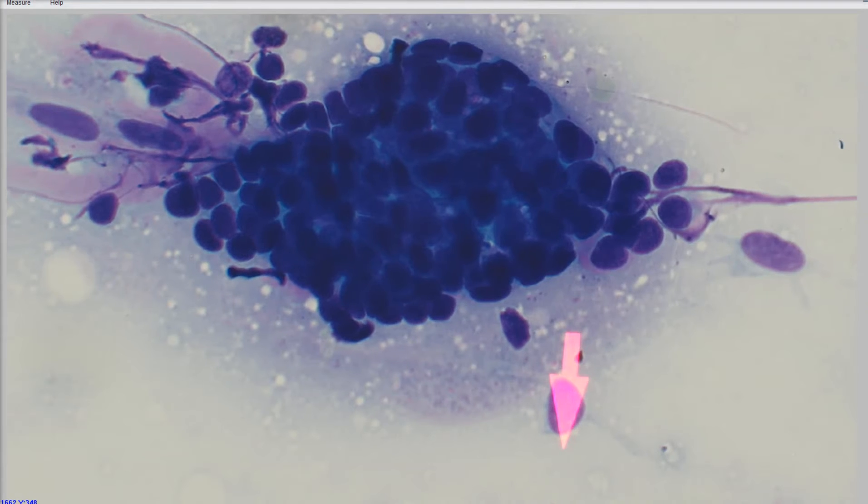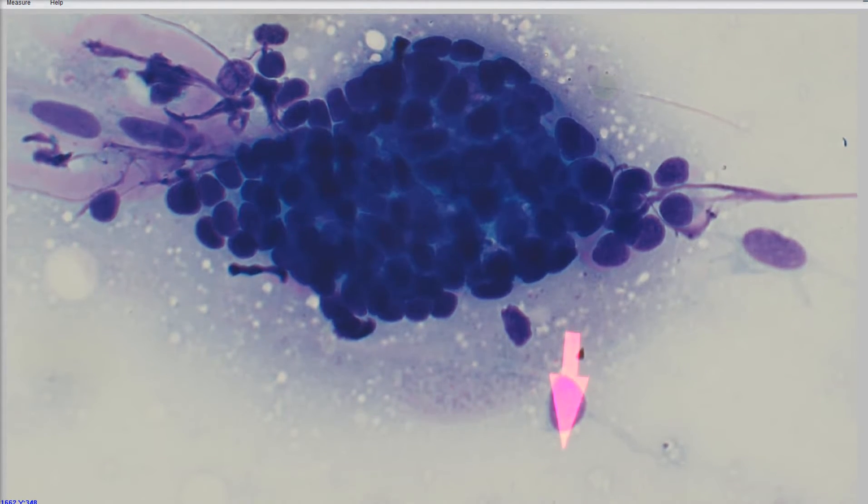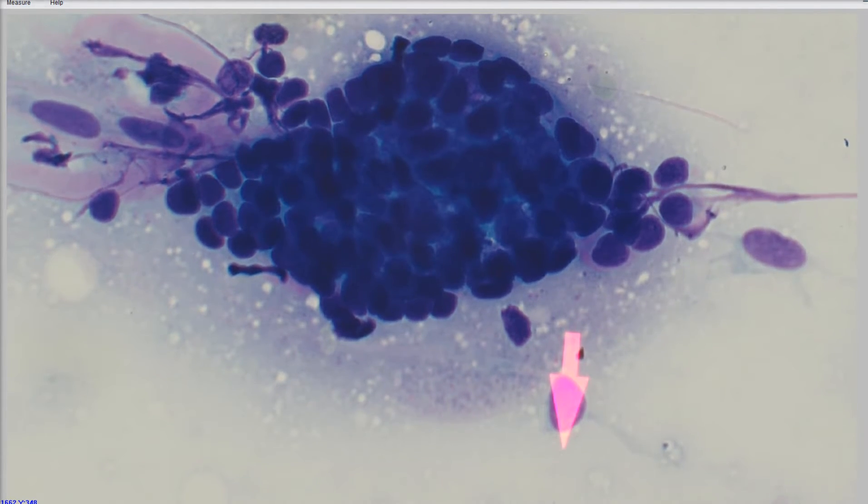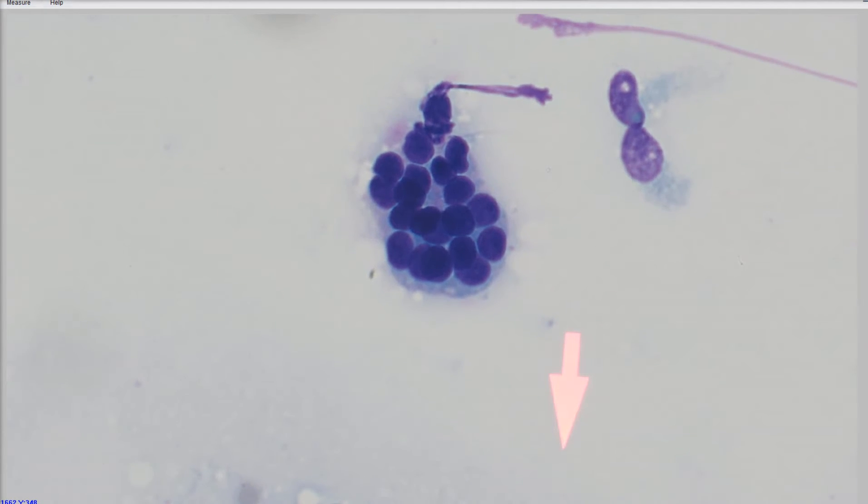So we have all these basal epithelial cells. This would be consistent with a trichoblastoma, also called a basal cell tumor in cats mostly, is what we still, we call it a basal cell tumor in cats, but in dogs we're classifying them now as trichoblastomas. And there are other types of follicular tumors that can have basal epithelial cells in them. So I don't always just straight up call it a trichoblastoma. I just suggest, you know, it's a follicular tumor.